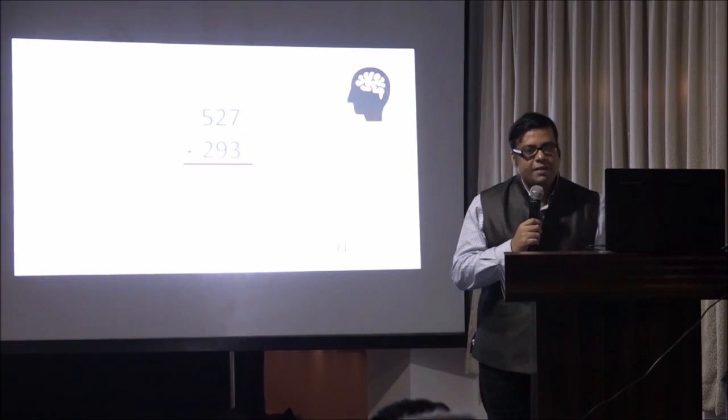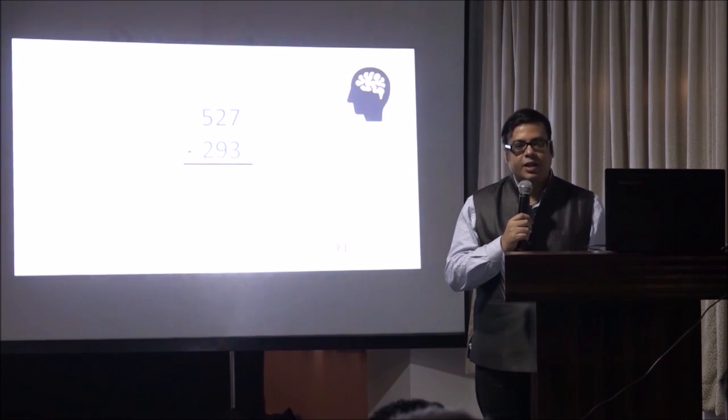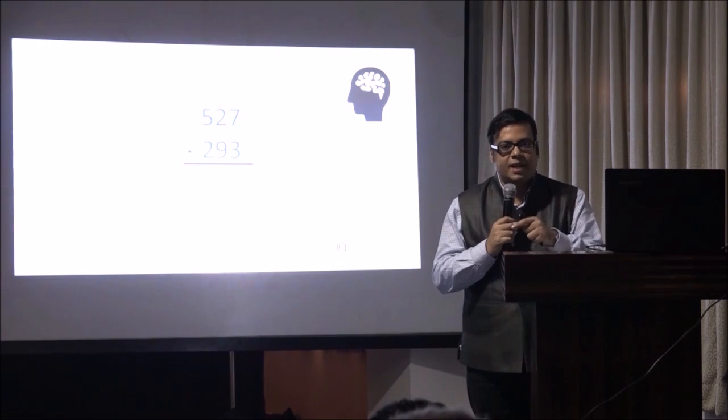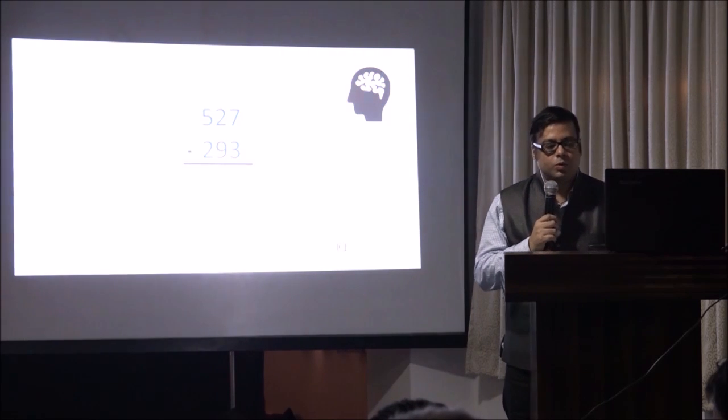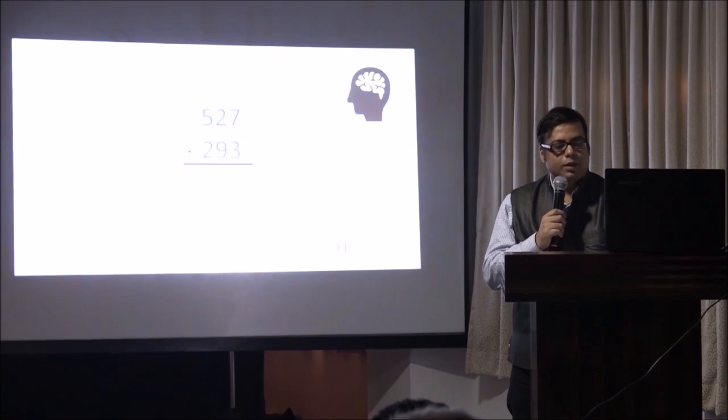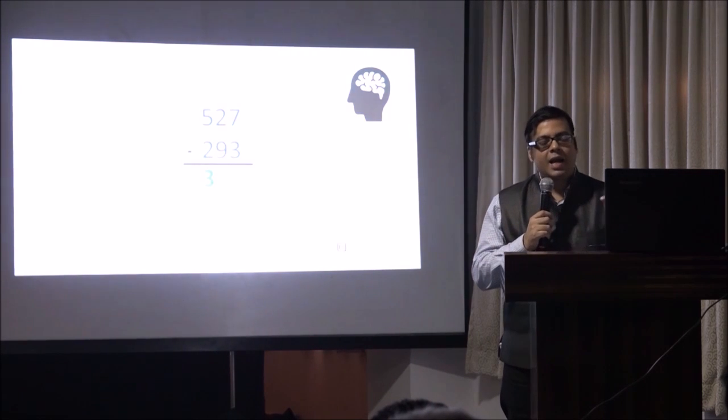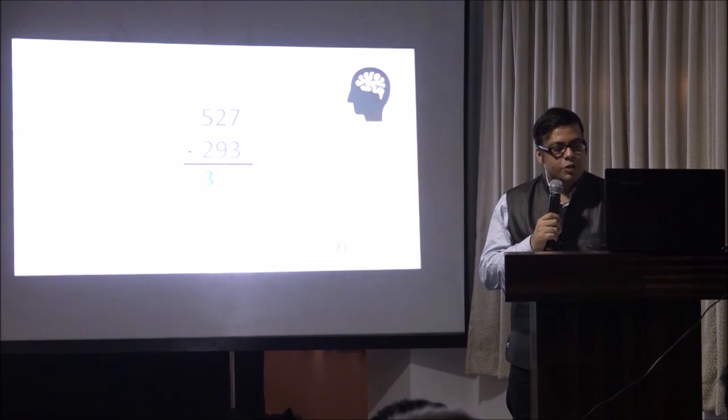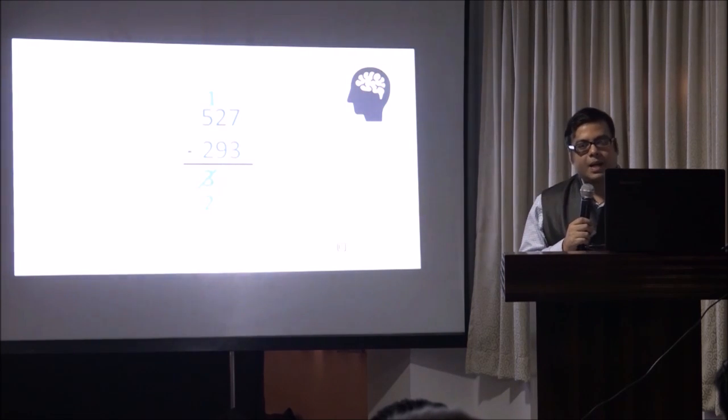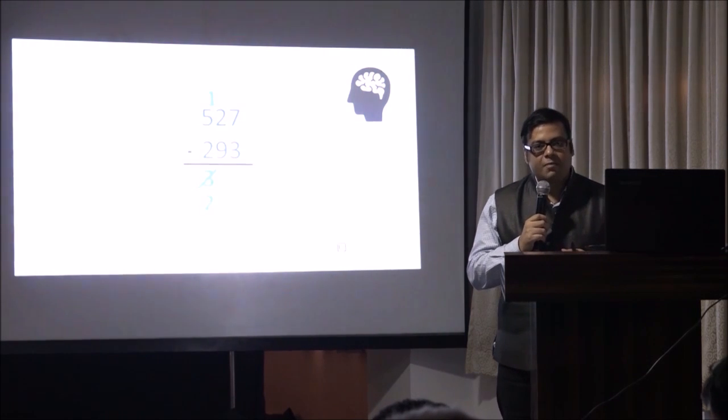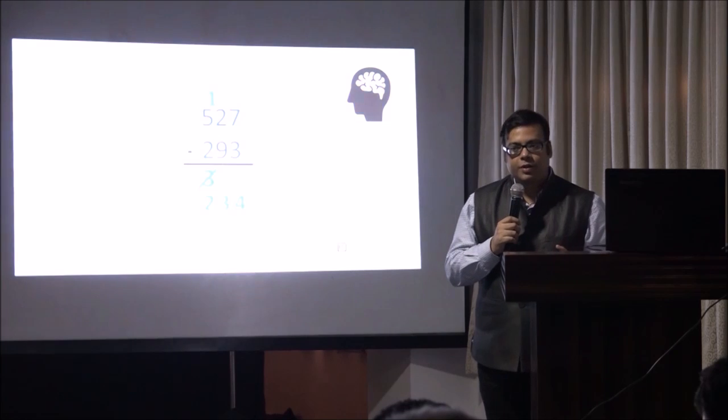Let's see subtractions. So we have a sum, 527 take away 293. Now, the traditional way it goes, you subtract 3 from 7 on the right-hand side. But we go left to right. So what is 5 minus 2? 3. And in the next column, you see that at the bottom, 9 is greater than 2. So what we do is, we go back one step, make 3, 2, carry 1. And that becomes 12. 12 minus 9 gives you 3, and 7 take away 3 is 4. That's your answer, 234.